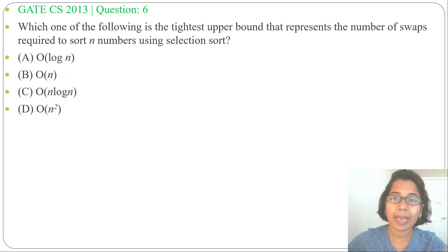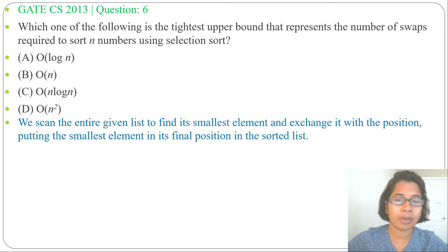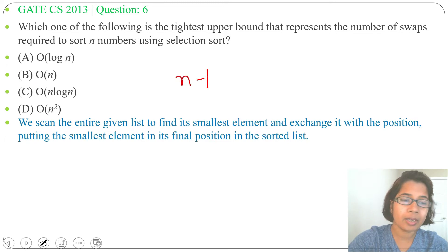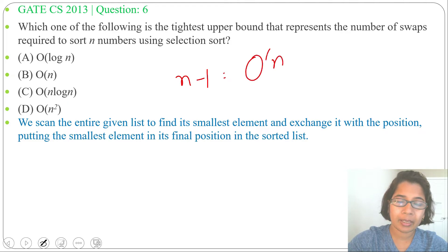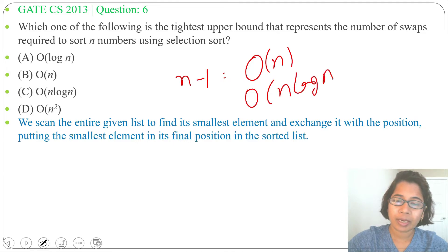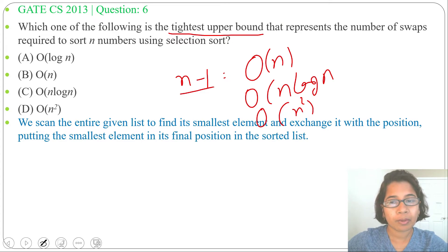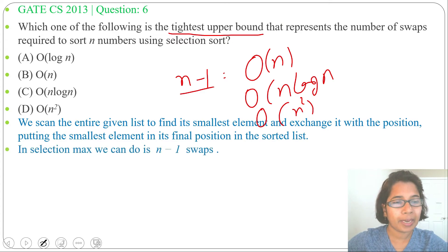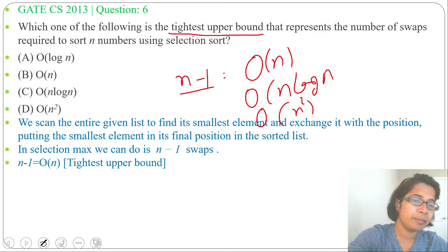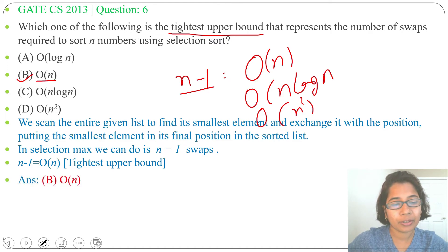In every iteration we are doing just one swap, and we do n minus one iterations, so there are n minus one swaps total. For n minus one, the tightest upper bound — we could write O(n), O(n log n), or O(n²) — but the tightest upper bound is O(n).